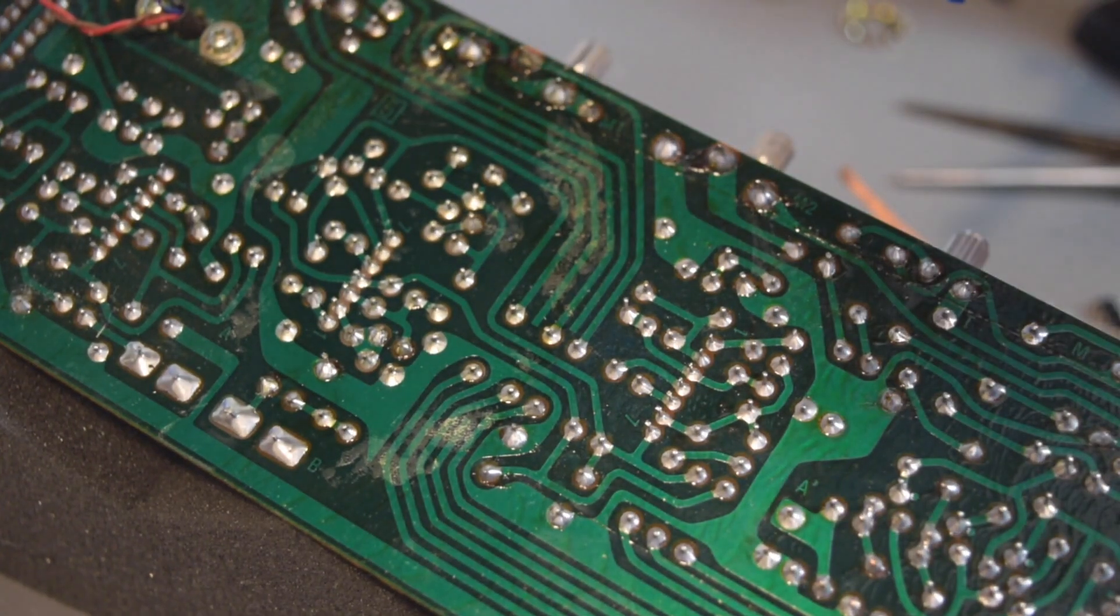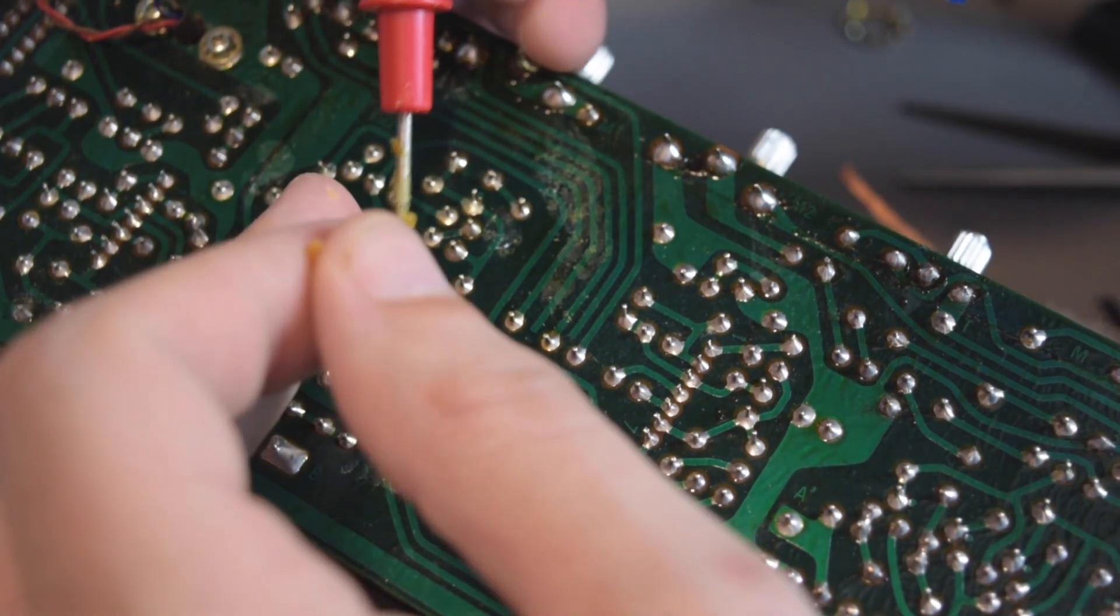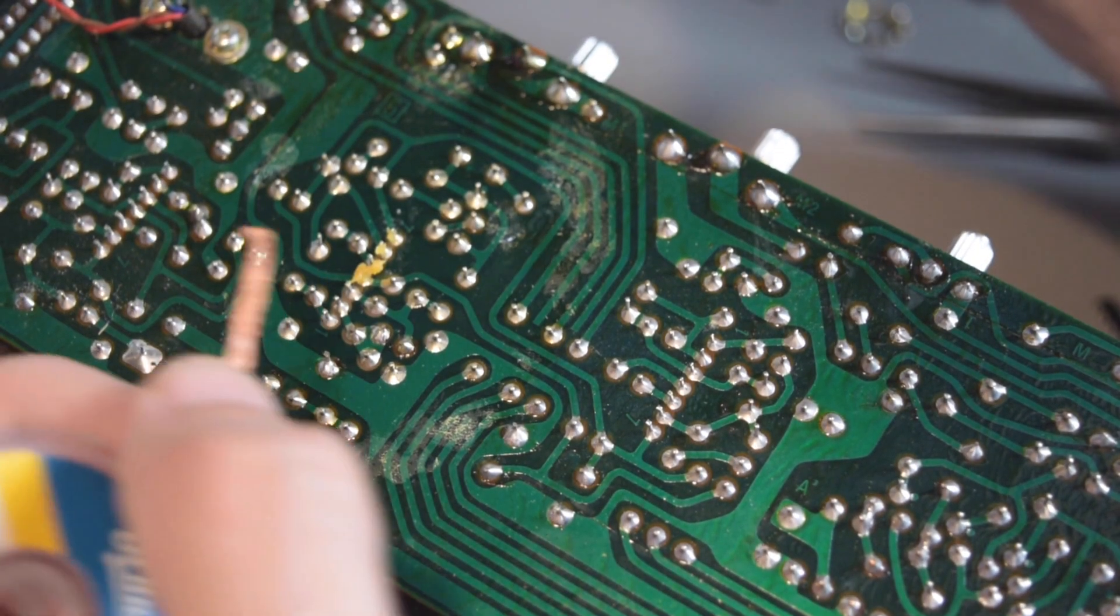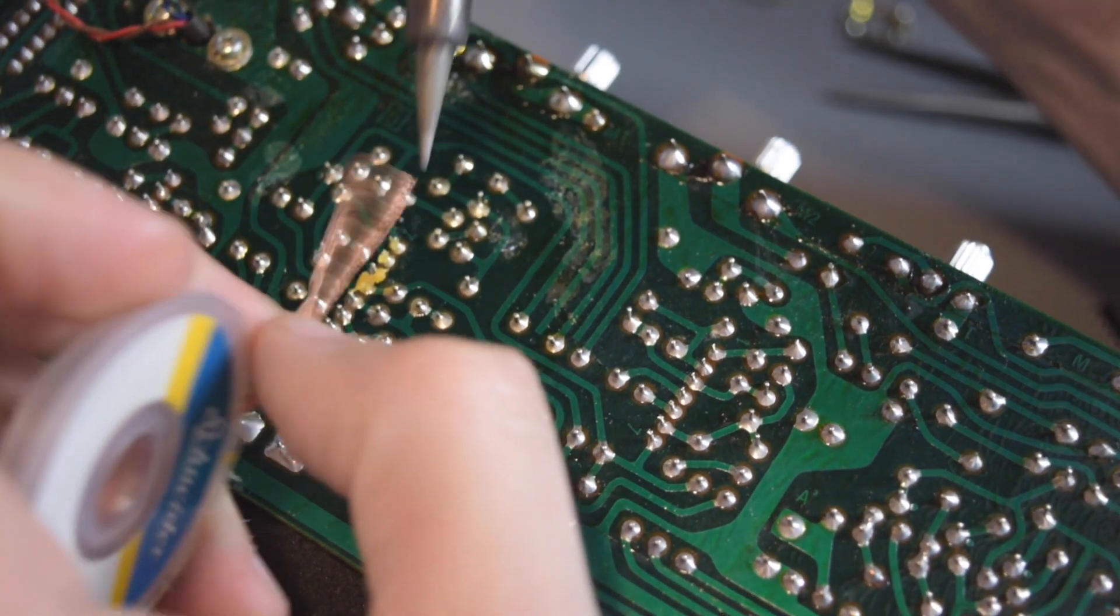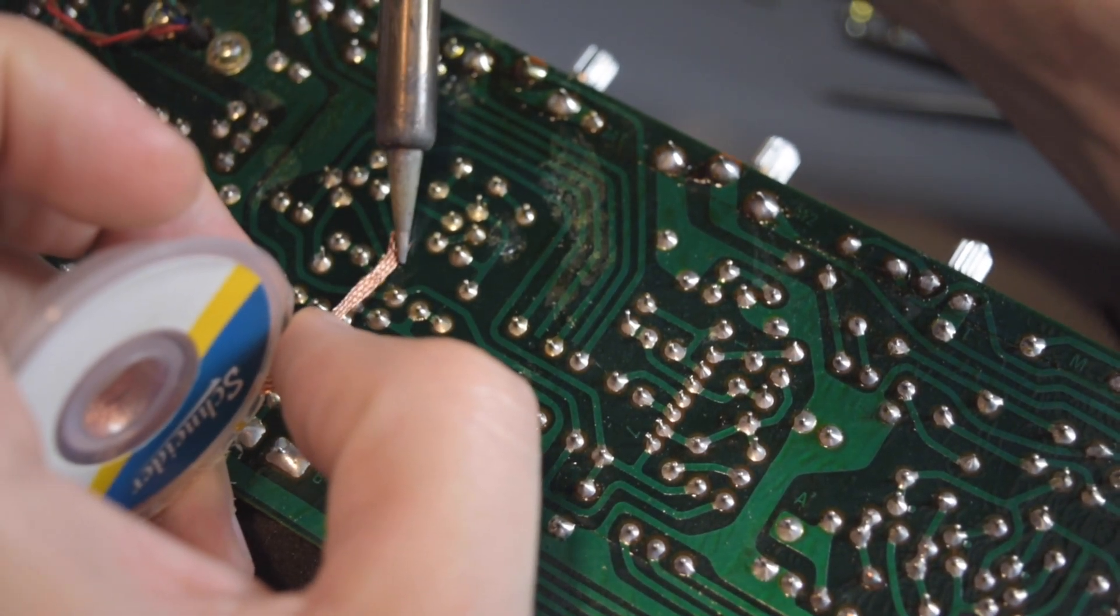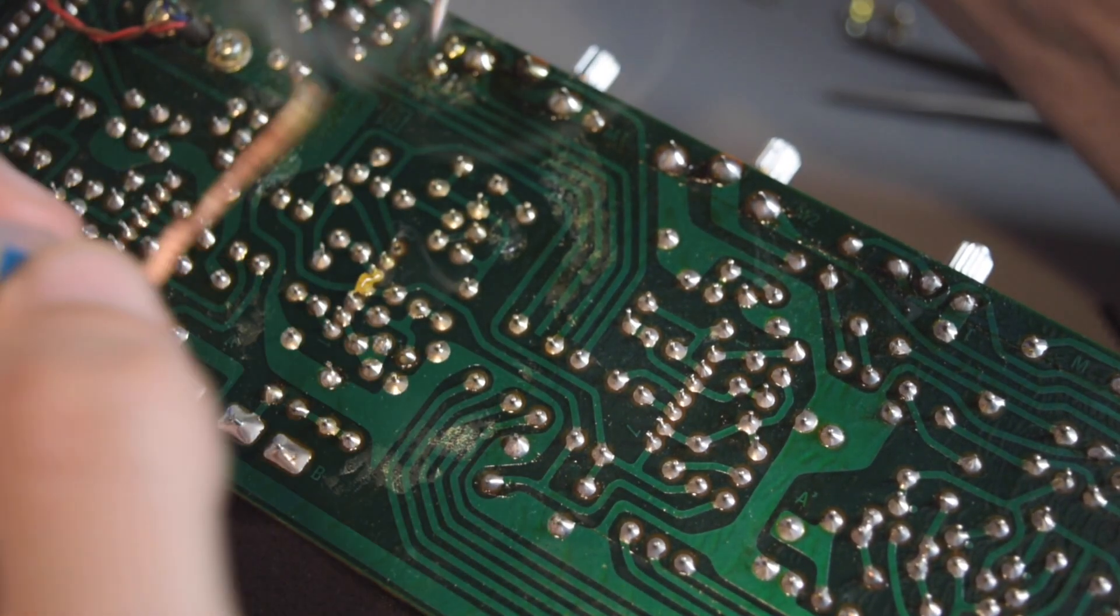I'm going to be using a little bit of flux on here combined with some desoldering wick and removing all the solder before I try to just yank the chip out. A little solder wick goes a long way if you combine it with some flux and some patience.